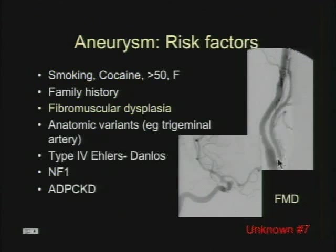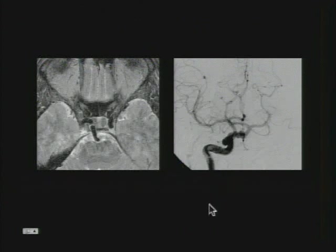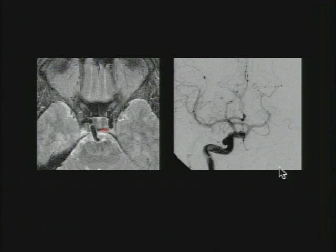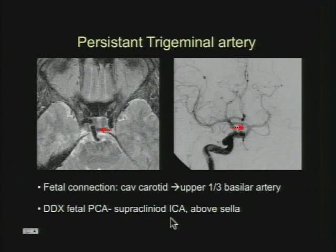When you look closely, the patient does have a supraclinoid intracranial aneurysm. Here's another risk factor — on the axial T2-weighted sequence, you can see a vessel extending from the cavernous carotid back to the basilar artery. On the conventional frontal injection of the right internal carotid artery, you can see filling of the basilar artery and PCAs in this patient with a persistent trigeminal artery. The differential here is a fetal PCA — remember, fetal PCA comes off the supraclinoid internal carotid artery, whereas this abnormality comes off the cavernous internal carotid artery as a connection to the basilar artery.